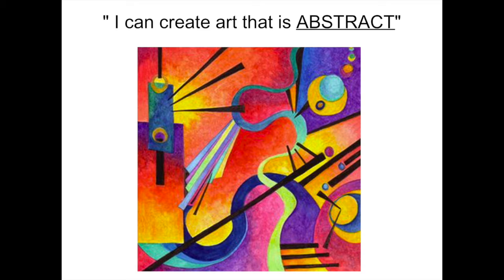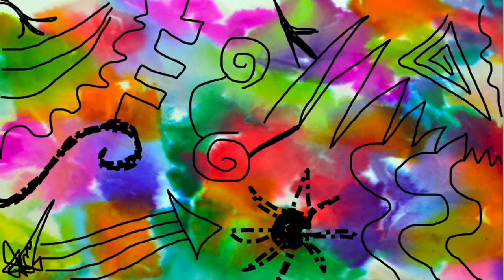He created this abstract painting using straight lines, curved lines, wavy lines, thick lines and thin lines, diagonal lines and even shapes. We can do that same thing by putting black lines on top of our tissue painting.